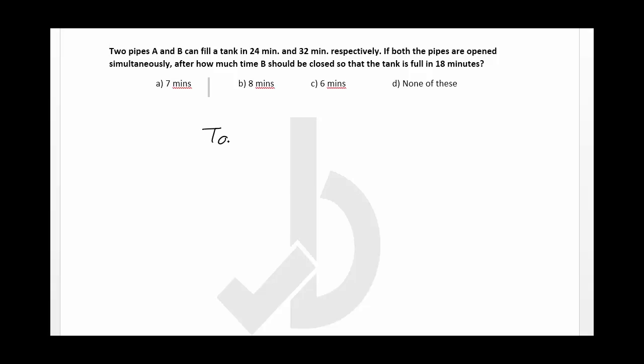Initially, tap A is going to take 24 minutes and tap B is going to take 32 minutes. It is said that both the taps are open. Tap A and tap B are open simultaneously, and after how much time the tap B must be closed?